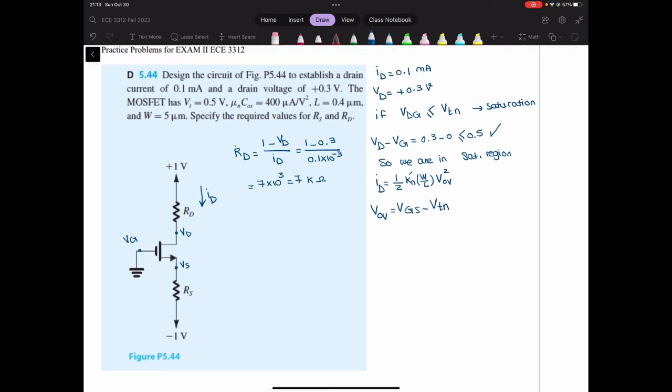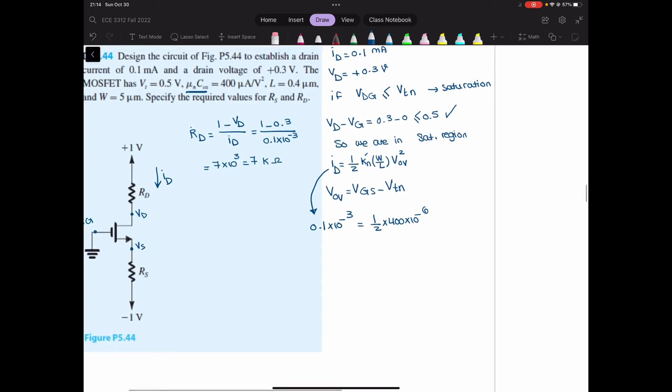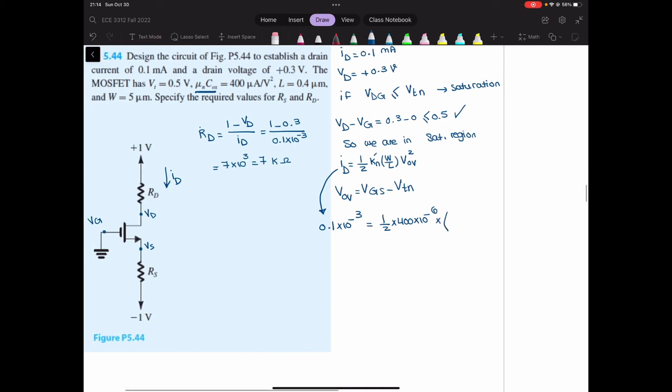So let's substitute for all these variables. ID, so I'm using this equation here, is 0.1 multiplied by 10 to the negative 3 equals half. K prime N is technically mu and C oxide, right? So that is half multiplied by 400 multiplied by 10 to the negative 6. That is micro because I have the milliamp on the other side. So I will write that 10 to the negative 6 over here. So I'm converting everything to the standard unit. This multiplied by W over L. W is 5 micrometer over 0.4 micrometer.